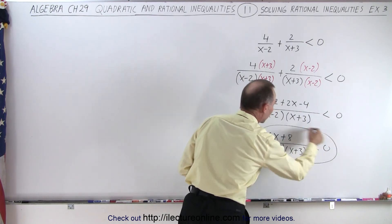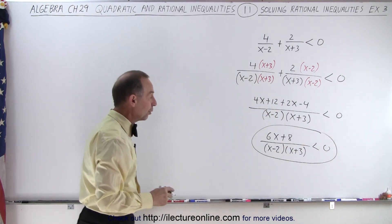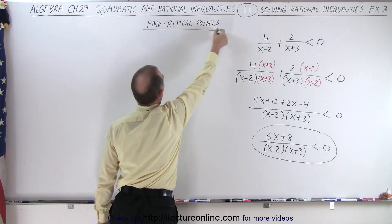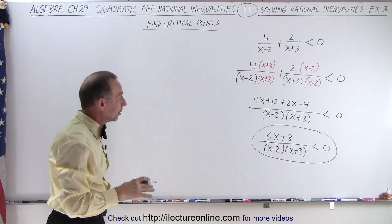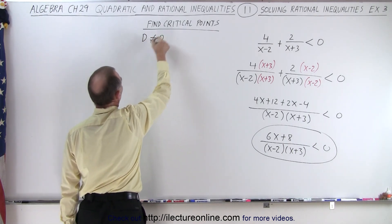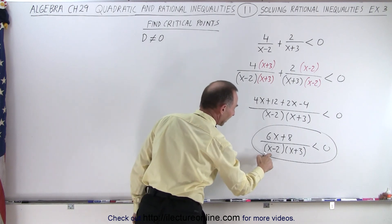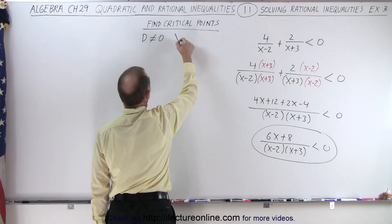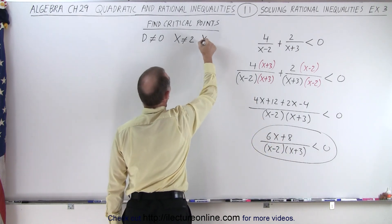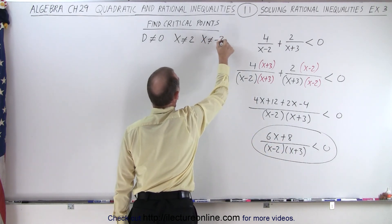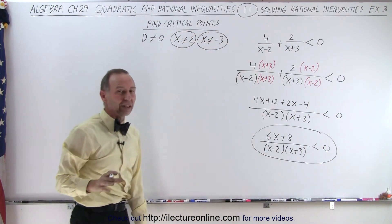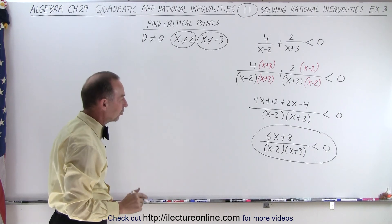So now we have this in a format that we can try to solve. We need to find all the critical points. Starting with the denominator — we know that the denominator can never be equal to 0, which means that x cannot equal 2, and x should not equal negative 3. So here are two of the critical points: the values that x cannot be because they would make the denominator 0.